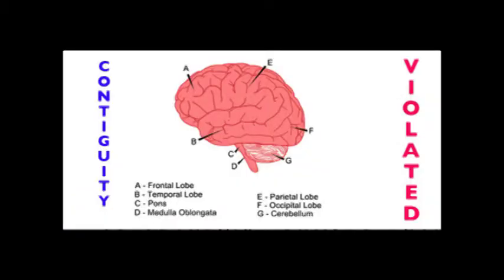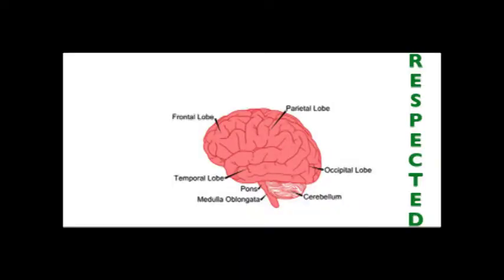Another principle is the contiguity principle: if we're going to have text and graphics, it's good to incorporate the text next to the part of the graphic that is relevant. So if we're going to have on-screen text superimposed on the video, it should not be placed as a caption — it should be placed next to the part of the image it's talking about, so that people don't have to look back and forth. The text is right next to where you should be looking.